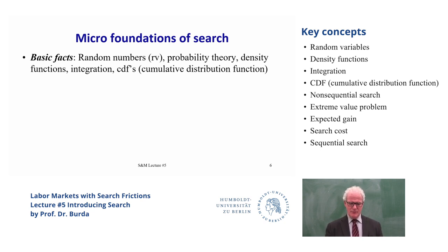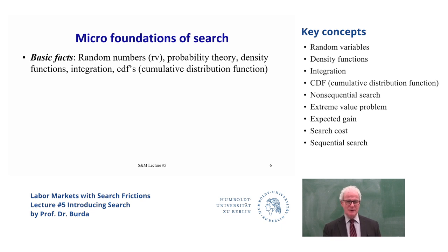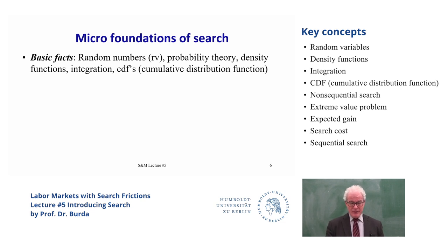There are fundamentally many different ways to think of the search process. Search means incompleteness of information. If information were complete, you'd find in zero time the ideal job for your lifetime. But information is not freely available and may be changing over time. The world may not even be stationary. So to do this, we need to think about a stochastic environment, about randomness. The most important random number will be the wage that one is offered.